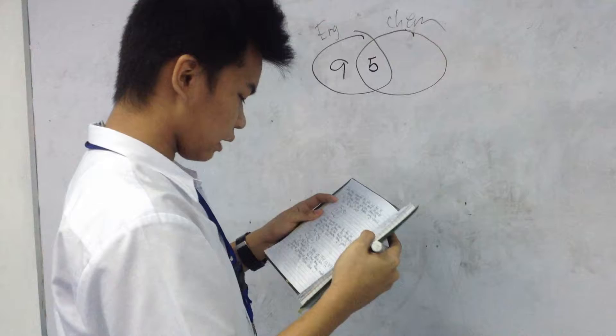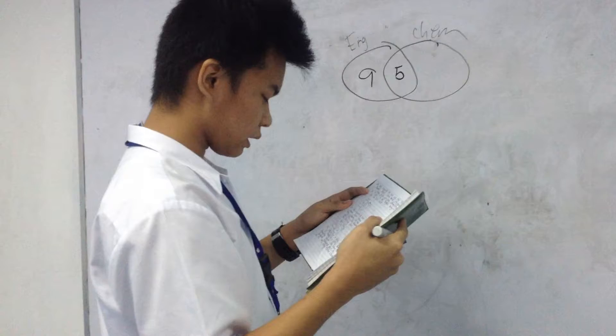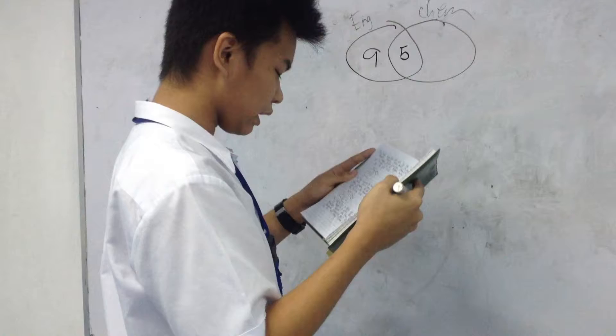I've also accounted for 5 of 29 chemistry students, leaving 24 students taking chemistry but not English. I put 24 in the chemistry-only part of the chemistry circle.